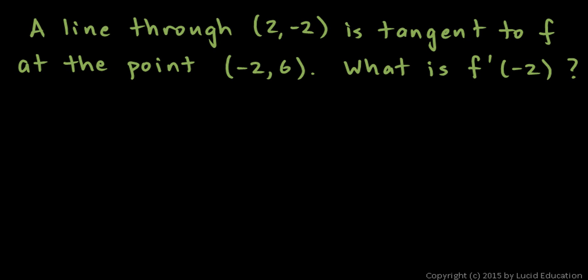A line through the point (2, -2) is tangent to function f at the point (-2, 6). What is f'(-2)?